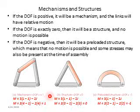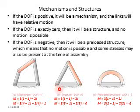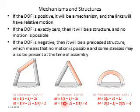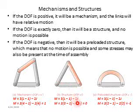For mechanism number 2, let's count the links: the first is the ground or fixed link, then the 2nd and 3rd link — so 3 links total. Counting the joints: joint 1, 2, and 3. Putting these values into the formula gives a mobility or degree of freedom equal to 0.